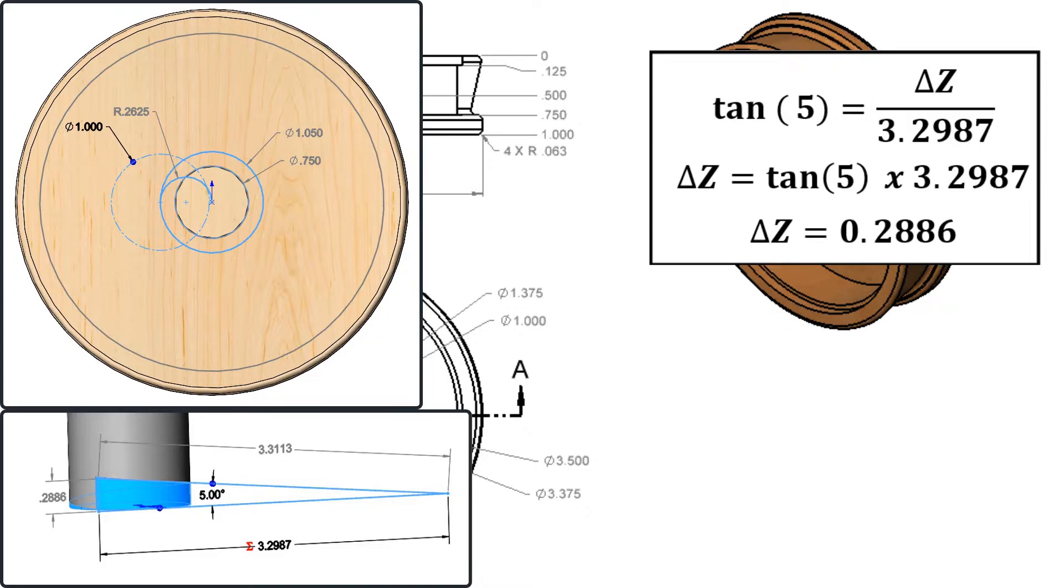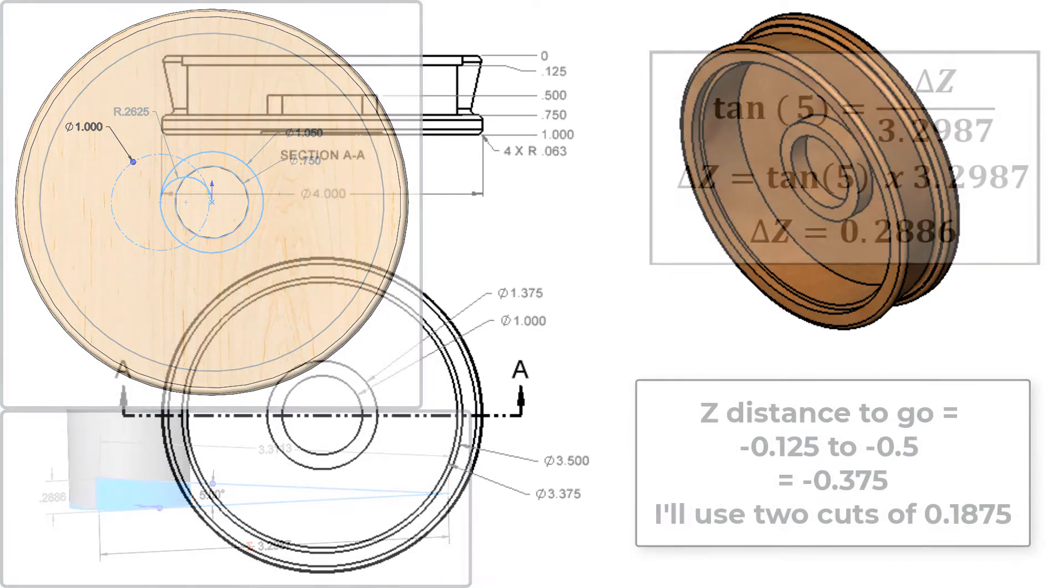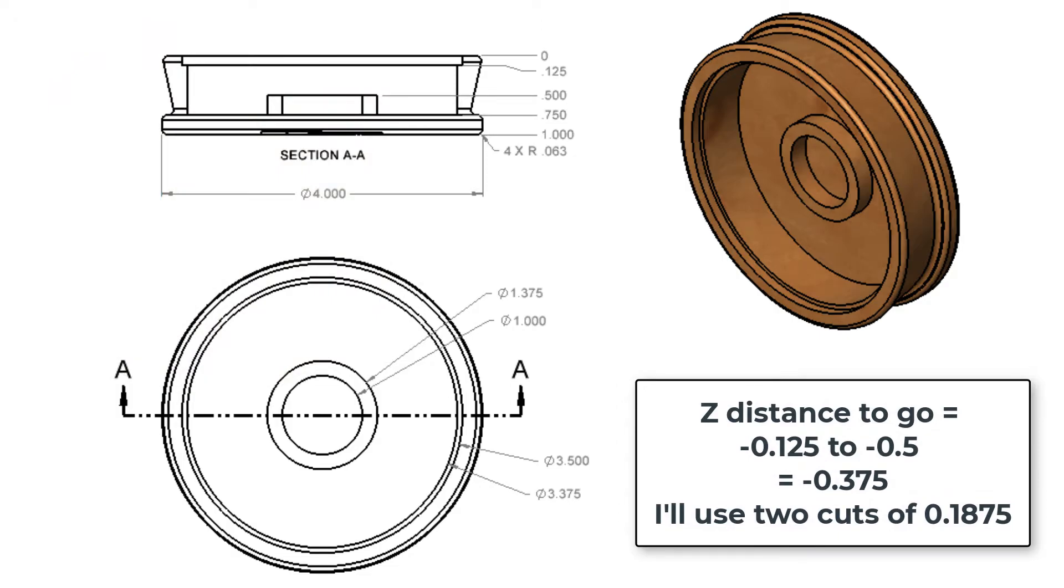Next I'll calculate the exact step down amount. Since the first 1 eighth of the pocket has already been cut, and the top of the island is at negative 0.5, there's 3 eighths of material in the Z axis to remove. Therefore, I'll take two cuts of 3 sixteenths.